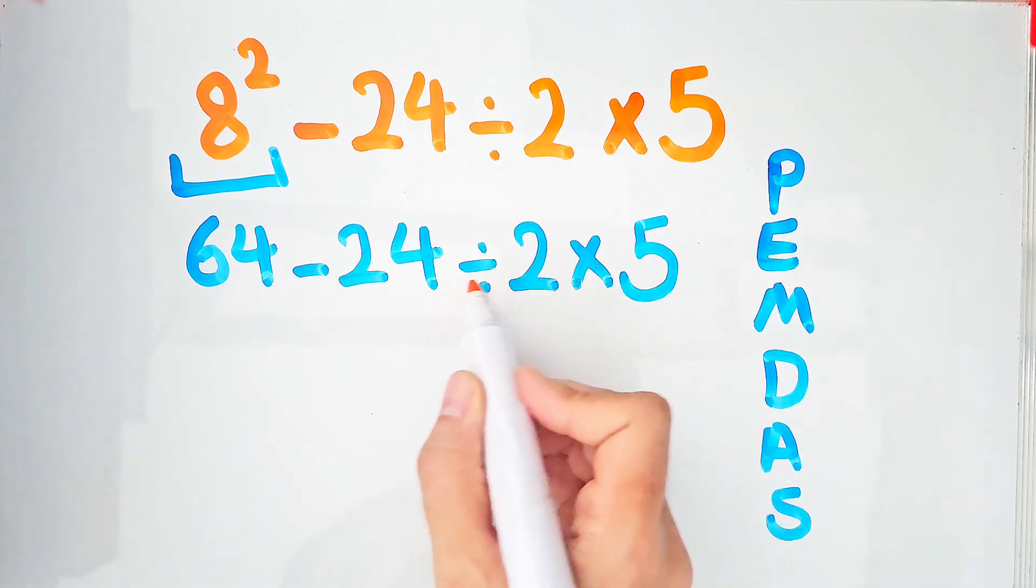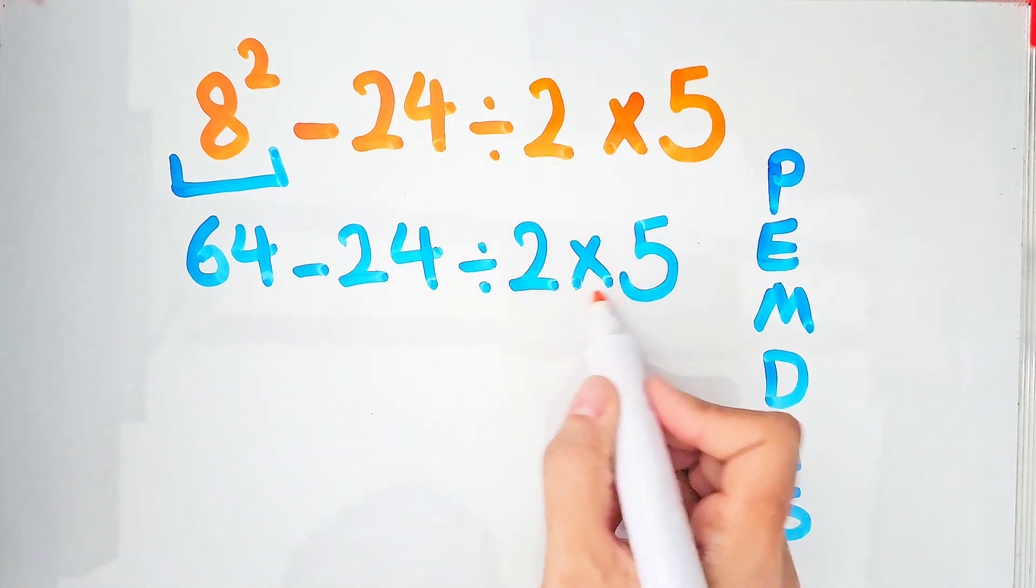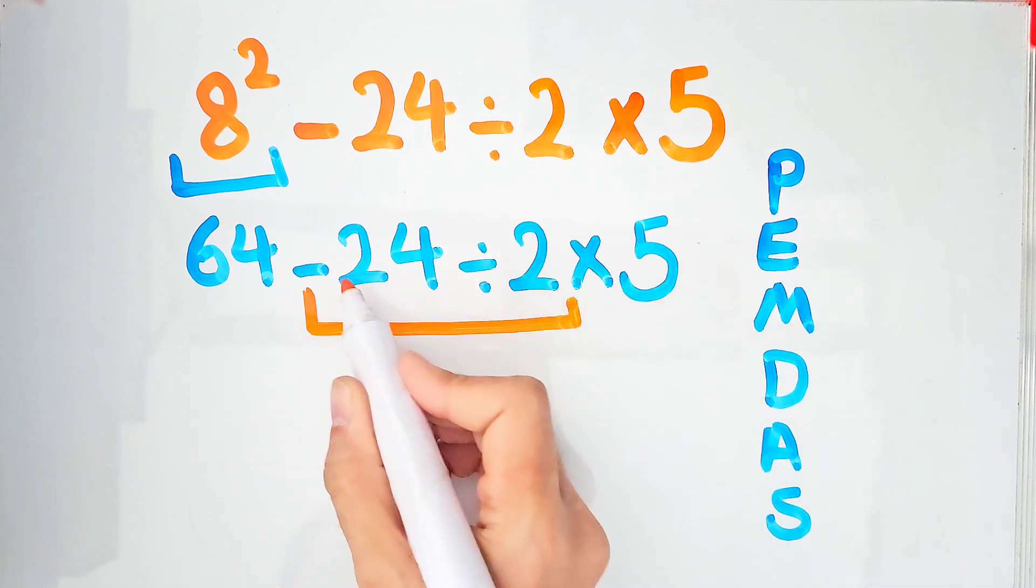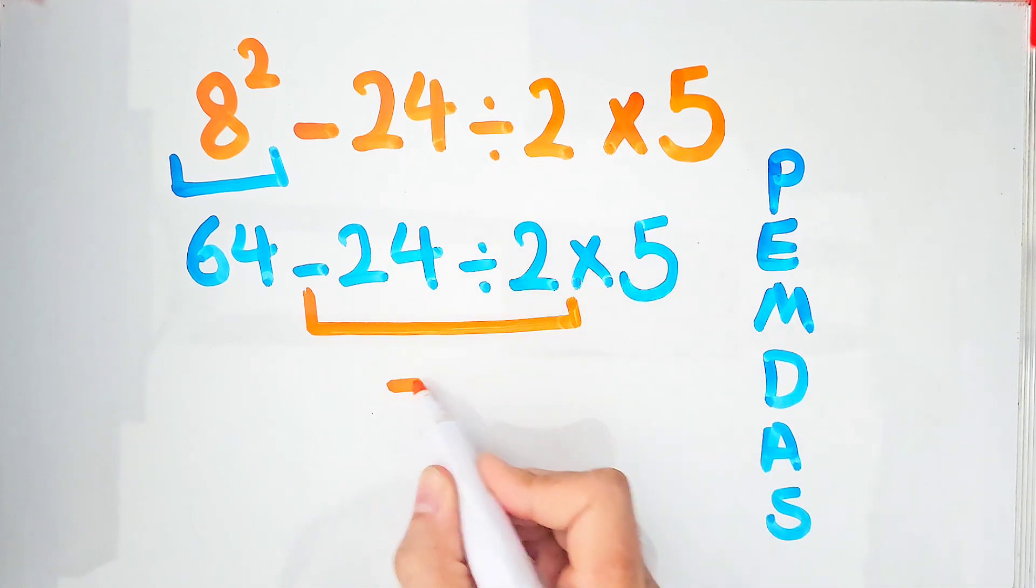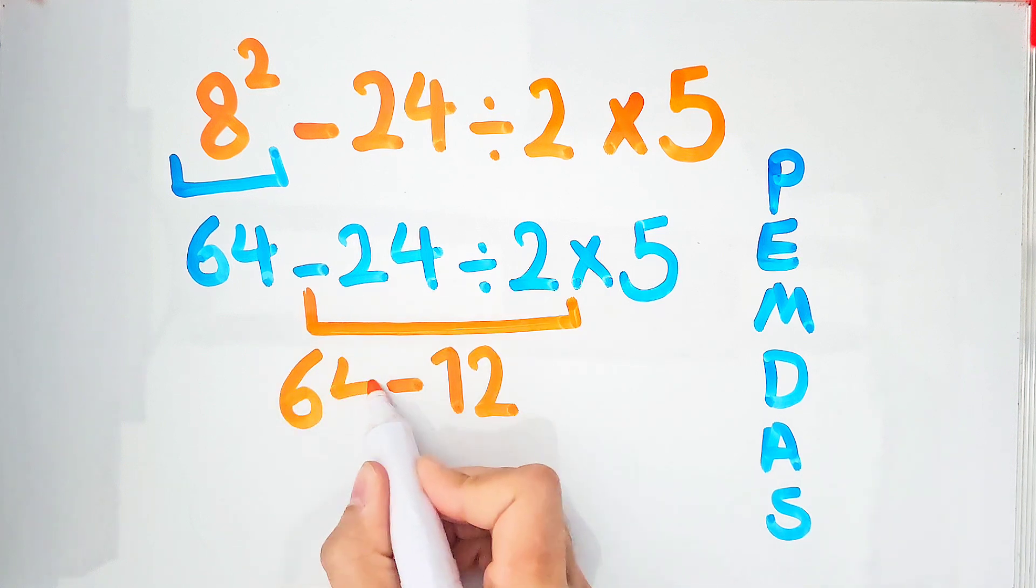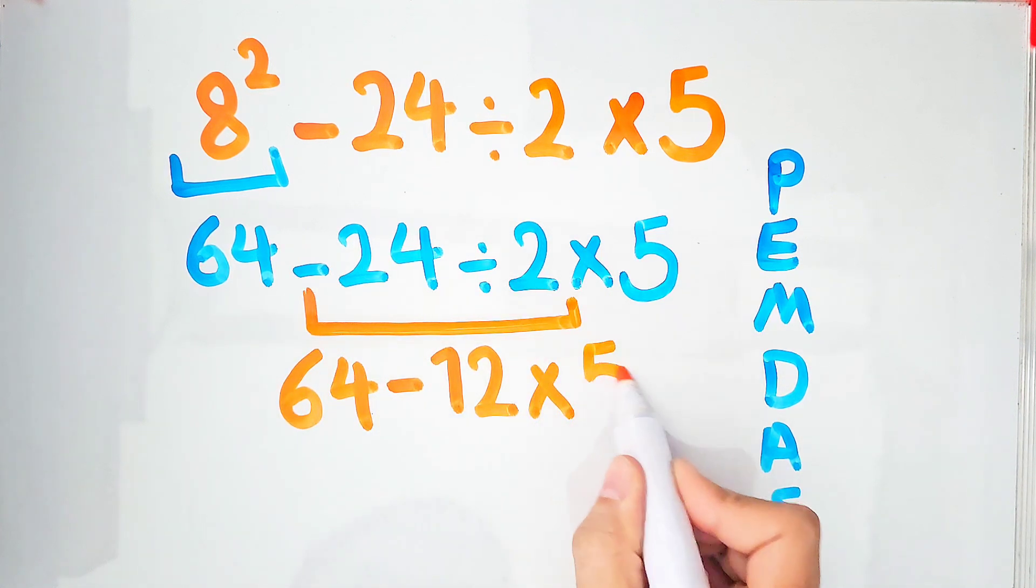Negative 24 divided by 2 equals negative 12. Now we have a new expression: 64 minus 12 times 5. Now we do multiplication because the multiplication has the higher priority than subtraction.